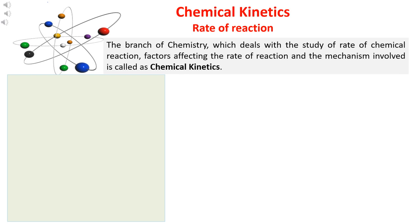In this slide, there is a small introduction about chemical kinetics. The subject is also known as rate of reaction. It is a branch of chemistry which deals with the study of the rate of chemical reaction, factors affecting the rate of reaction, and the mechanism involved — this is called chemical kinetics.